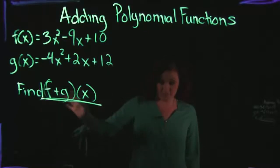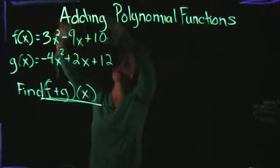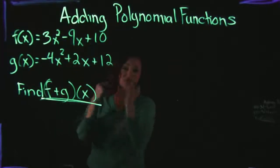Now this particular notation here is in function notation. f plus g of x simply just means that we want to take f of x and we want to add it together with g of x.